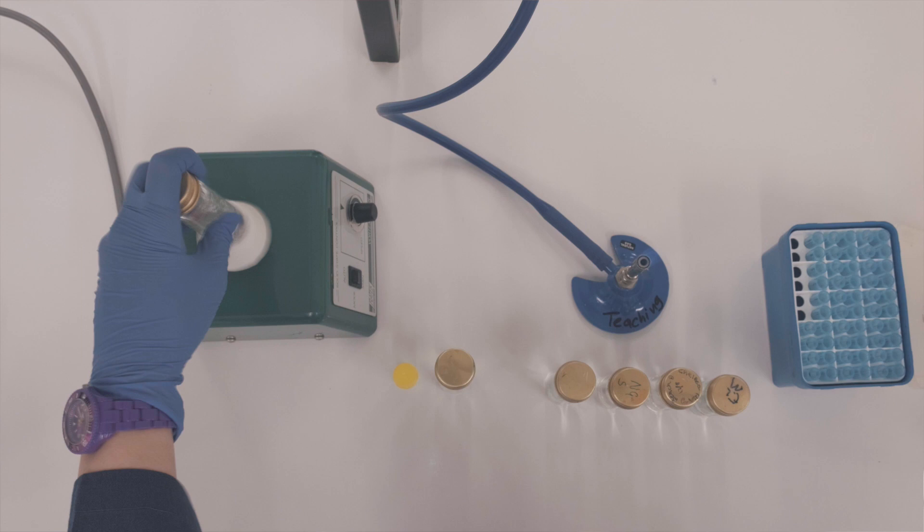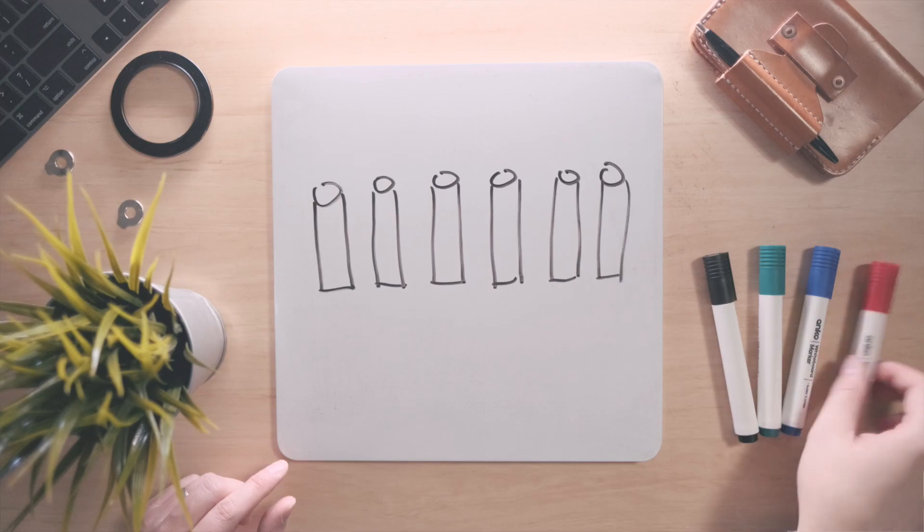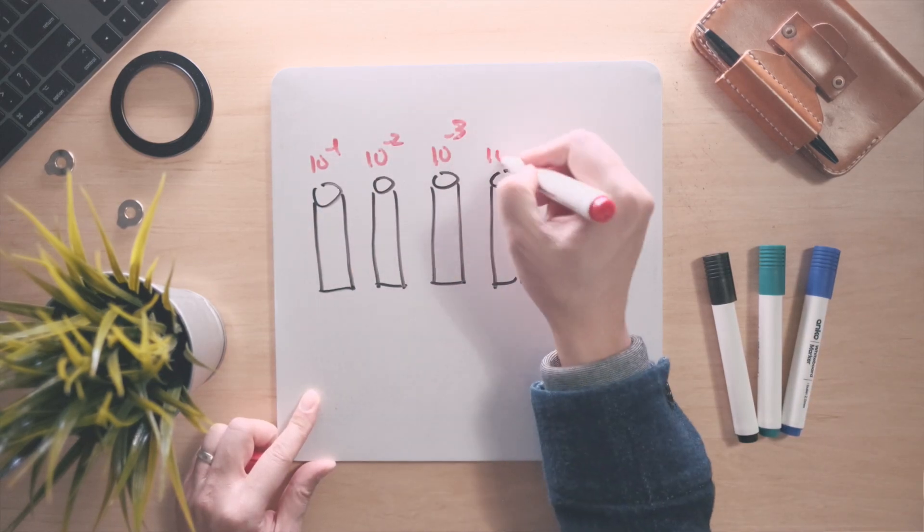Again, we homogenize by vortexing, and this is the second 1 in 10 dilution. This process is repeated across all 6 bottles.